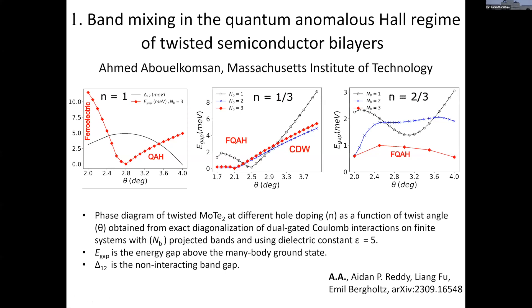Very briefly — this morning you've heard about the fractional and quantum anomalous Hall states. My poster studies the effect of band mixing on these kinds of states. The band structure consists of a number of bands, and we did exact diagonalization taking into account one, two, and three bands. What I show here is the phase diagram as a function of twist angle and number of bands, and also the energy gaps.